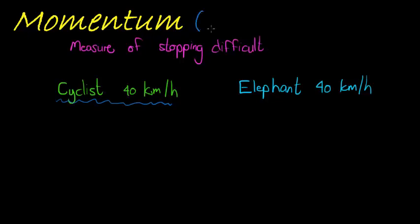So momentum, the letter we use for momentum is P. And we notice here that P, the momentum of an object in motion, is directly proportional to the mass of that object. So momentum is directly proportional to mass.